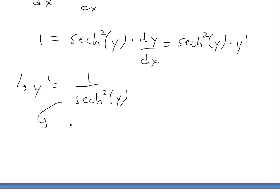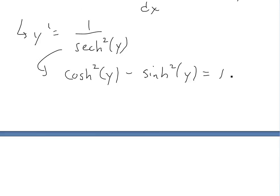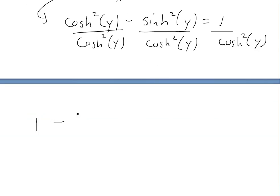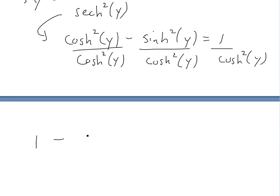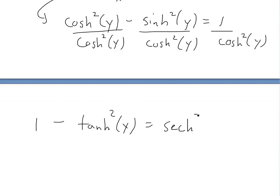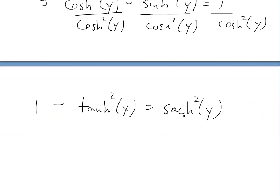To do that, we apply the hyperbolic identity: hyperbolic cosine squared of y minus hyperbolic sine squared of y equals 1 — proof is in the video link below. If we divide everything by hyperbolic cosine squared of y, the left side becomes 1 minus hyperbolic tan squared of y, and the right side becomes hyperbolic secant squared of y by definition.